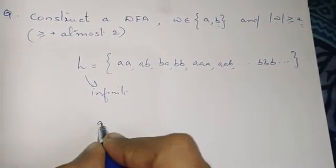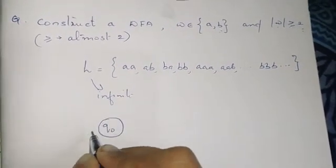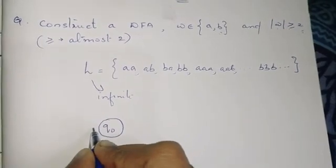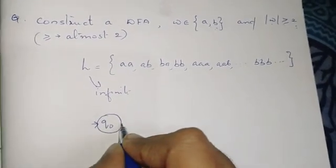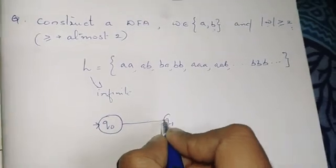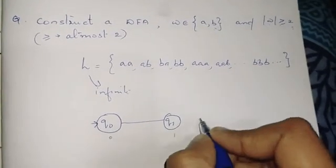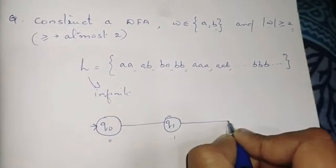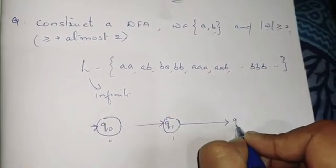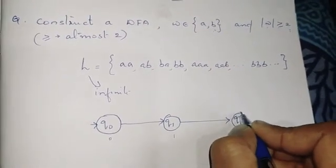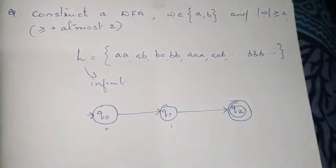First, we have a starting state Q0. This represents string length zero. Then Q1 represents string length one. Next, Q2 is added — this is the final state, representing string length two or more.